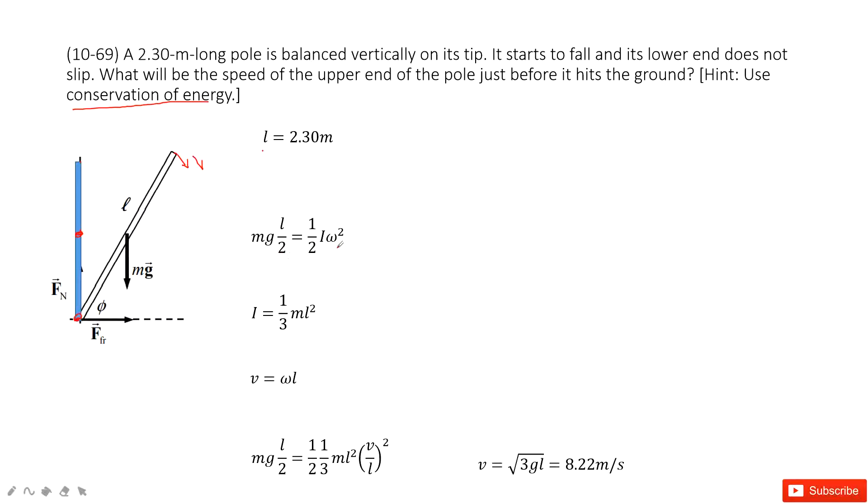So one-half I omega squared. And this I is from our textbook, one-third ML squared. You can check your textbook. It is a long rod rotating around one end.